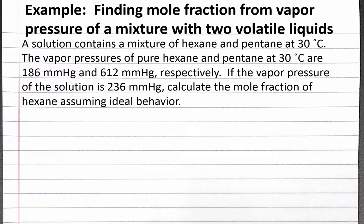The vapor pressures of pure hexane and pentane at 30 degrees Celsius are 186 mmHg and 612 mmHg, respectively. If the vapor pressure of the solution is 236 mmHg, calculate the mole fraction of hexane, assuming ideal behavior.